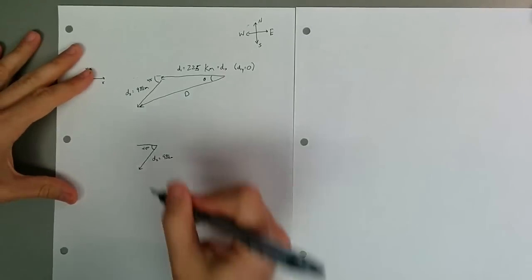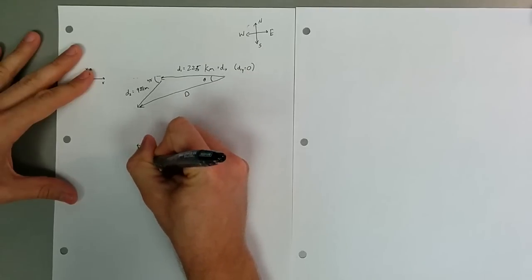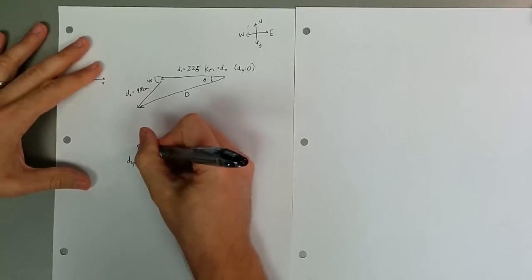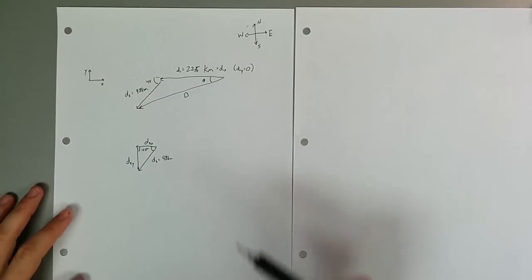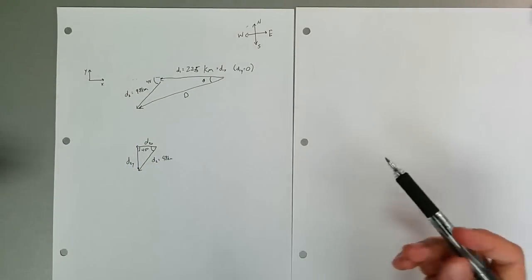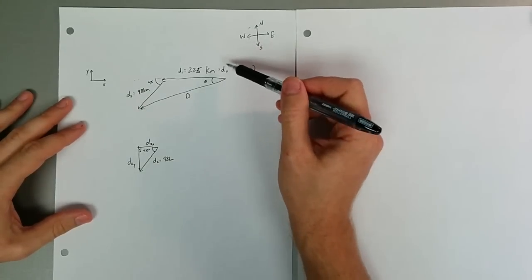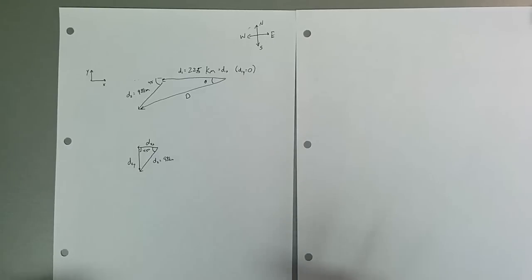What we're going to try to do is break this up into components where we're going to break it up into d2x and d2y. That's what we want to do where this is a right angle. What we can do is if we break it up into these d2x and d2y's, it turns out when you have components that are all along the same way, they just add together. So in other words, once we figure out d2x, we can just directly add it to d1x to get our total displacement in the x direction. The question is, how do we find d2x and d2y? This is where our old trigonometry comes in handy.